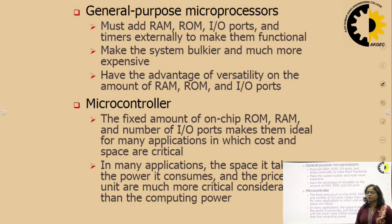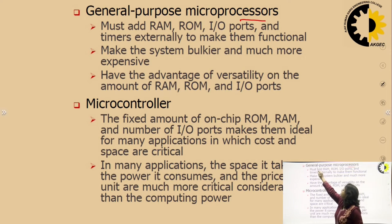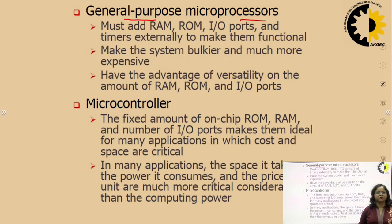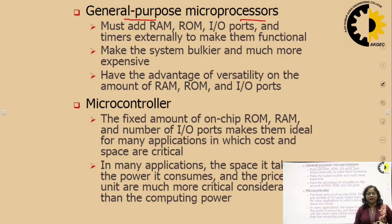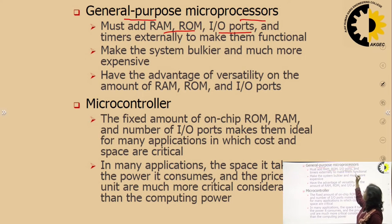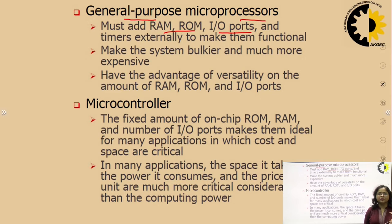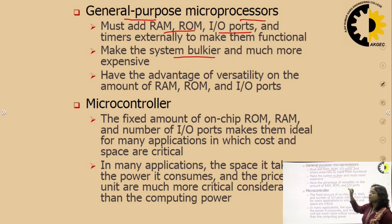As we have already discussed, a microprocessor is a general purpose device — that is, we can perform any type of application using a microprocessor. But to make a device out of a microprocessor, we should add some memory (RAM, ROM), I/O ports, timers, and interrupt controllers, plus some other devices externally, which makes the system bulkier and much more expensive.